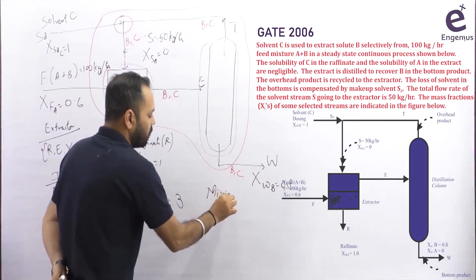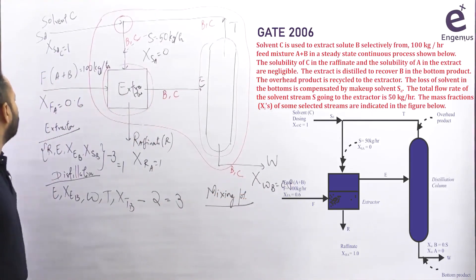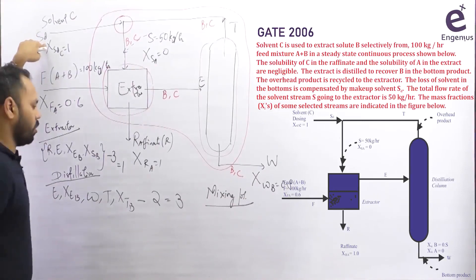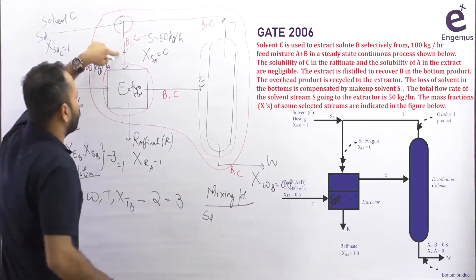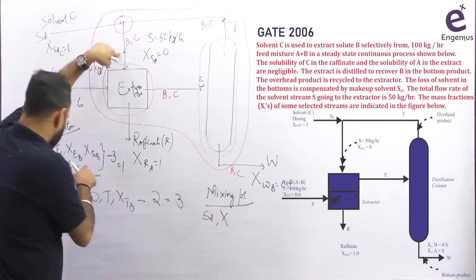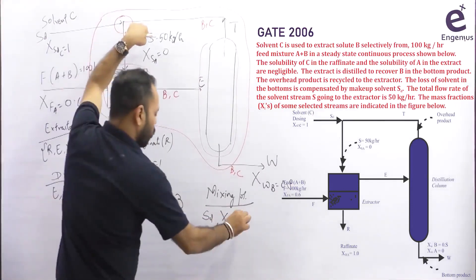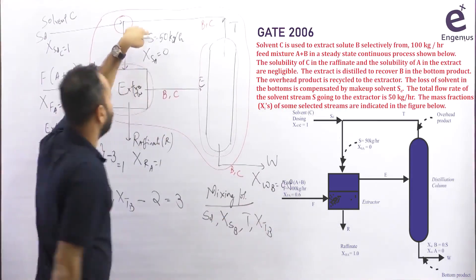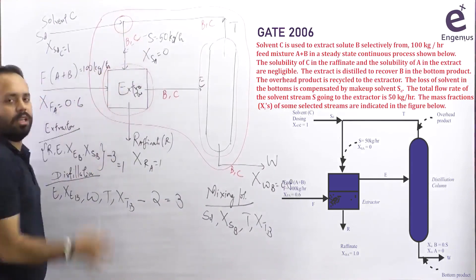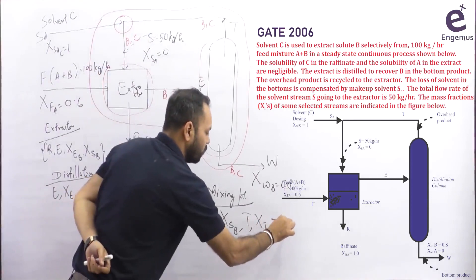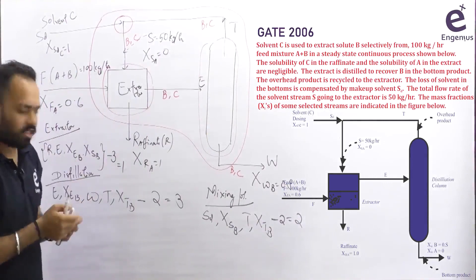Let's talk about the mixing point. Unknowns: SD is not known — one. X_SB is not known — two. T is not known — three. X_TB is not known — four unknowns. How many equations? Only species B and C cross the mixing point boundary — two species, two equations. Four minus two gives degree of freedom equal to two. Cannot start with the mixing point.